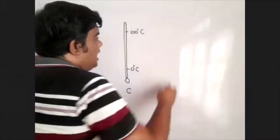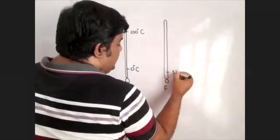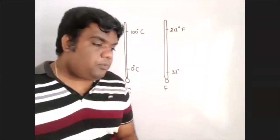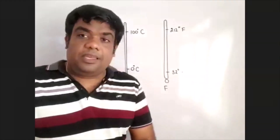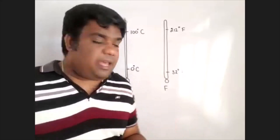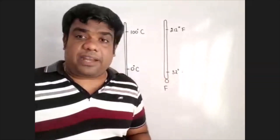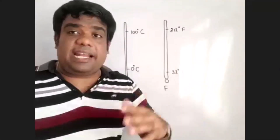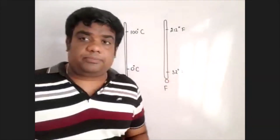In the Fahrenheit scale, the lower fixed point is 32 degrees Fahrenheit — that is the ice melt temperature. The scientist's name is Fahrenheit. The upper fixed point, the steam point, is 212 degrees Fahrenheit. The scale is different, but the same temperature is being measured. This is the ice melt point.